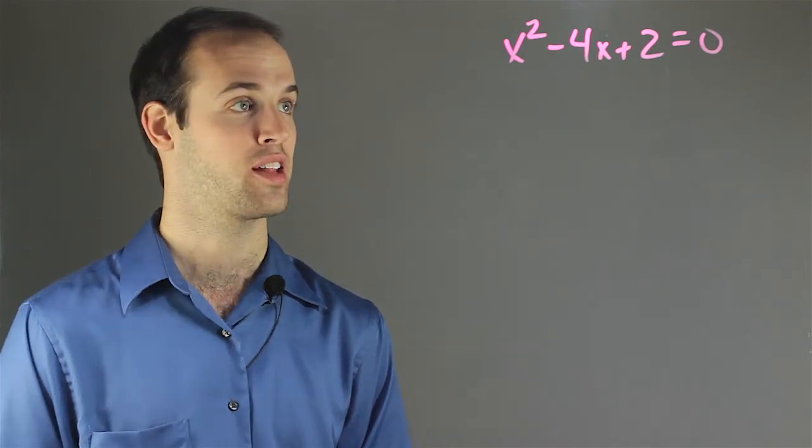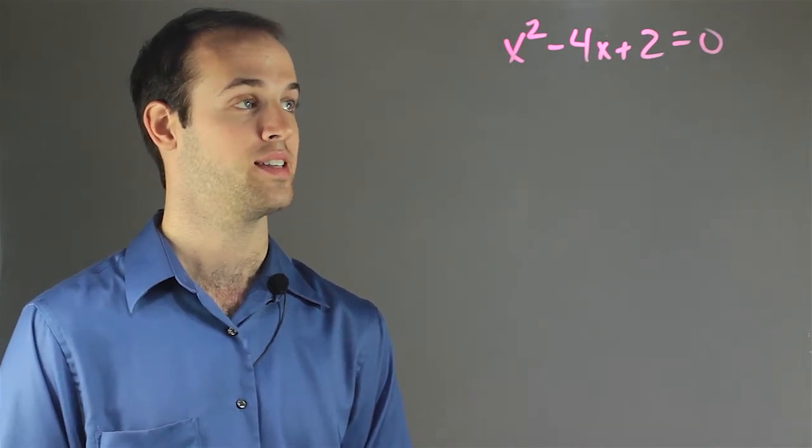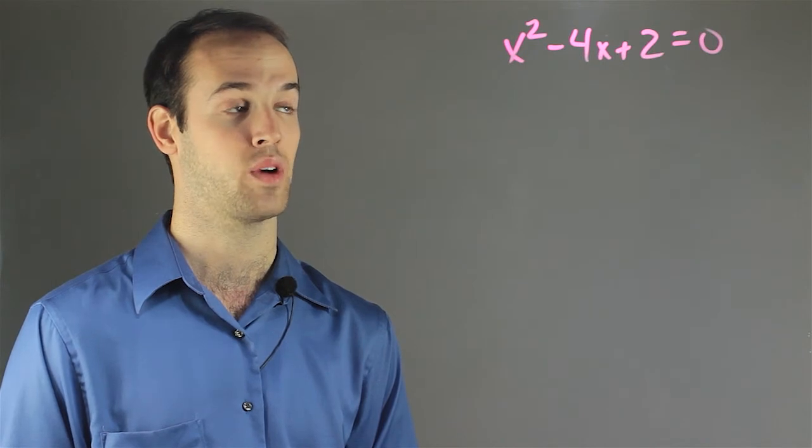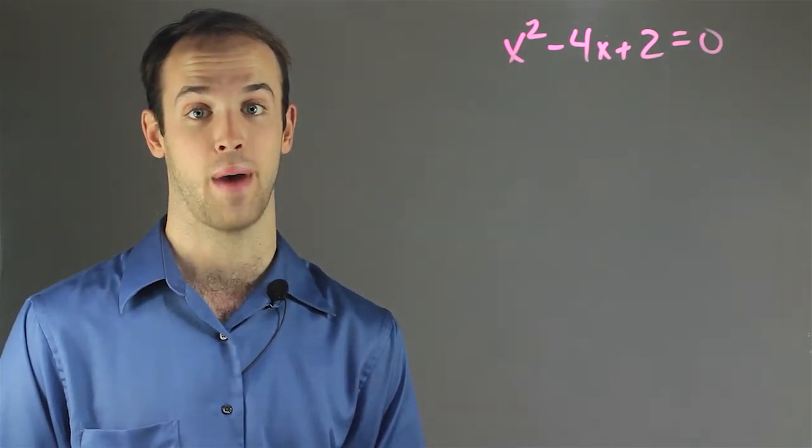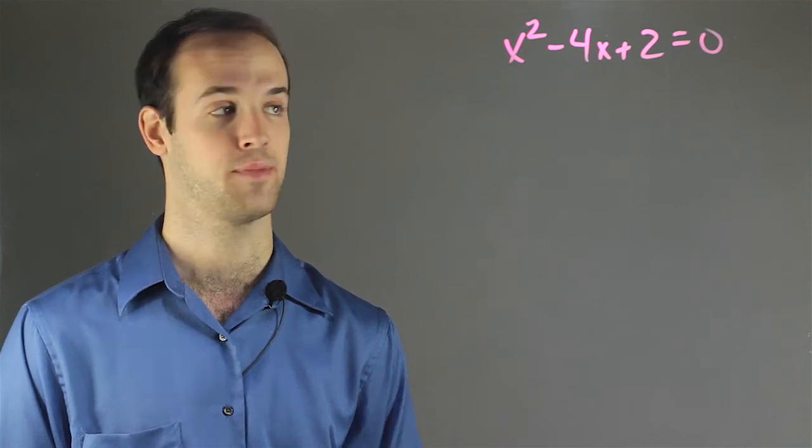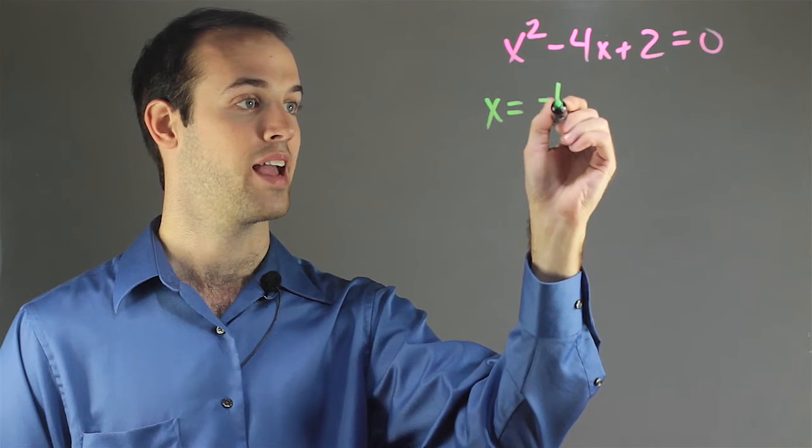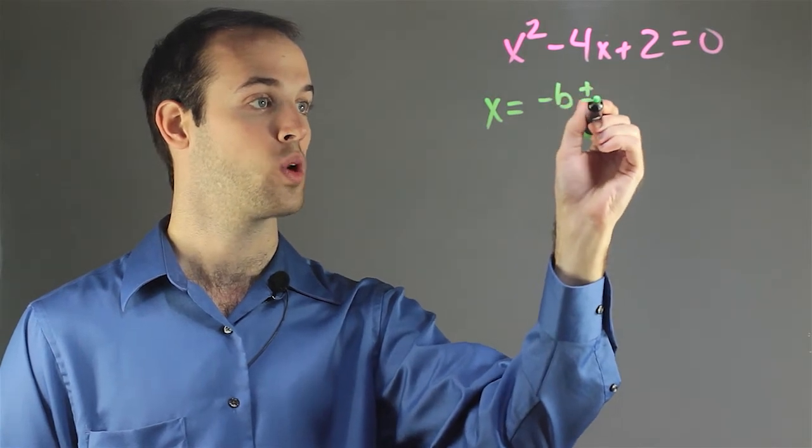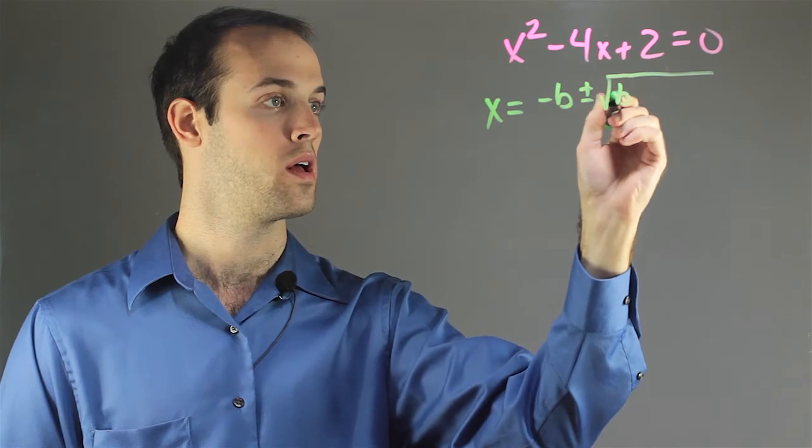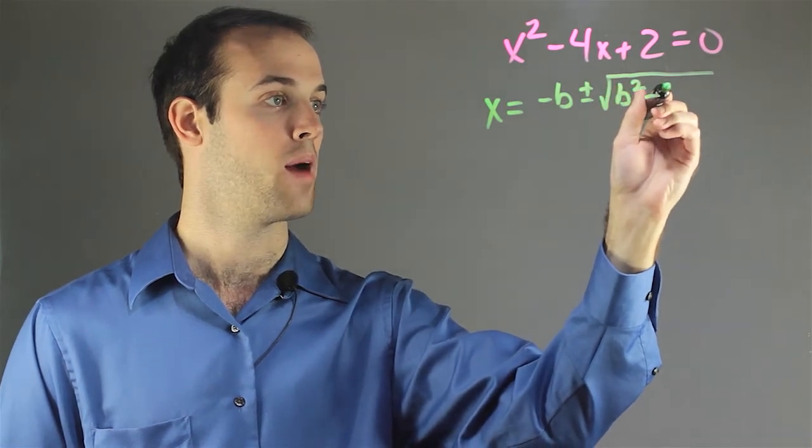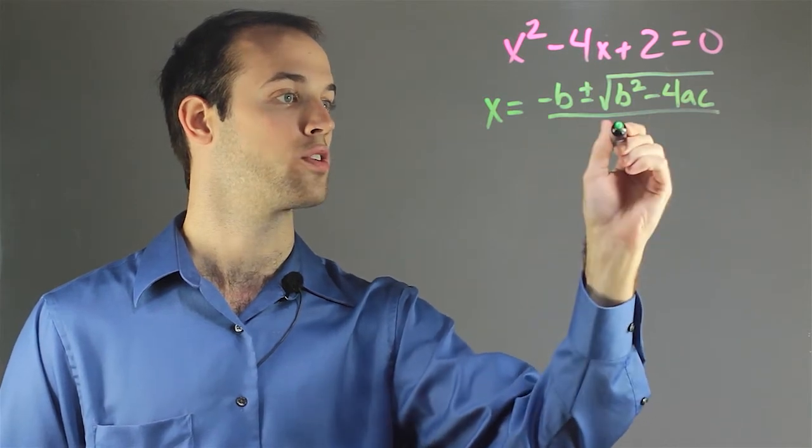So let's take a look at this quadratic. We have x squared minus 4x plus 2 is equal to 0. And I can see right away that this is one that is not going to work out very well if I try to factor it. So my next bet is to use the quadratic formula, which is written just like this: x equals negative b plus or minus the square root of b squared minus 4ac all over 2a.